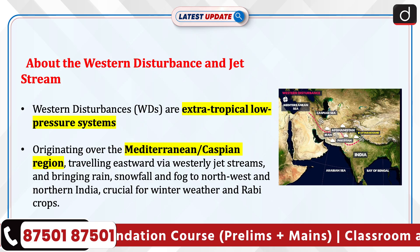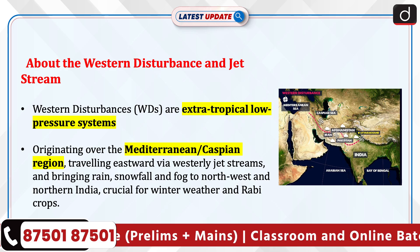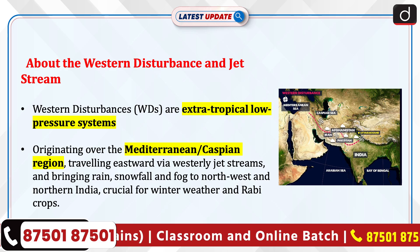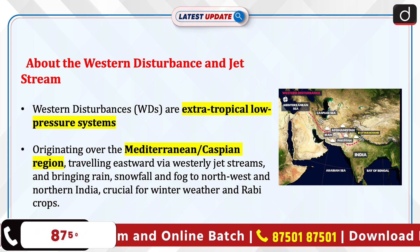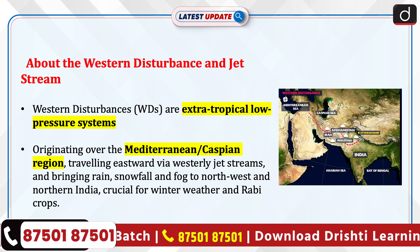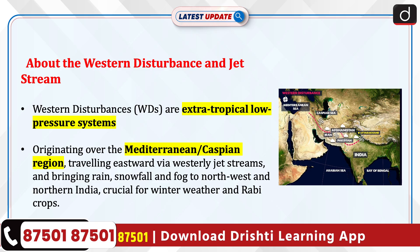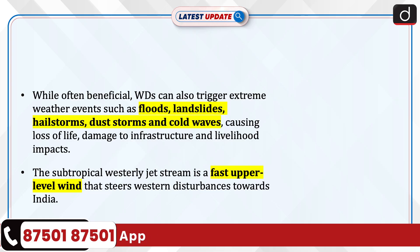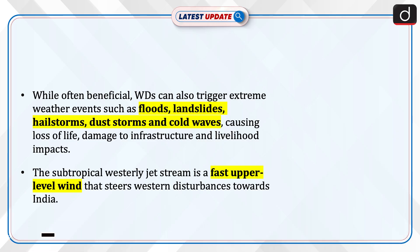Now let's discuss western disturbances and the jet stream. Western disturbances are extra-tropical low-pressure systems originating over the Mediterranean and Caspian region, travelling eastward via westerly jet streams and bringing rain, snowfall, and fog to northwest and northern India. They are crucial for winter weather and rabi crops. While often beneficial, western disturbances can also trigger extreme weather events such as floods, landslides, hailstorms, dust storms, and cold waves, causing loss of life, damage to infrastructure, and livelihood impacts. The subtropical westerly jet stream is a fast upper-level wind that steers western disturbances towards India.